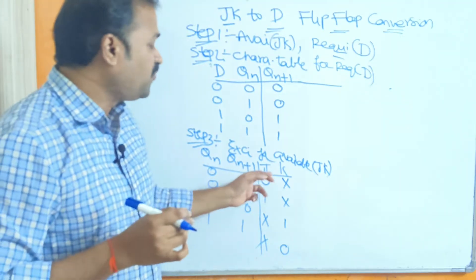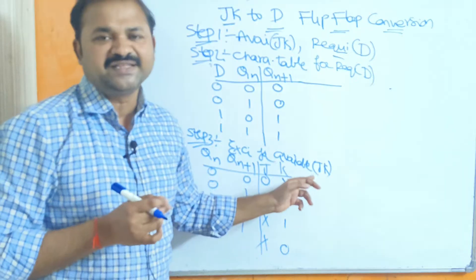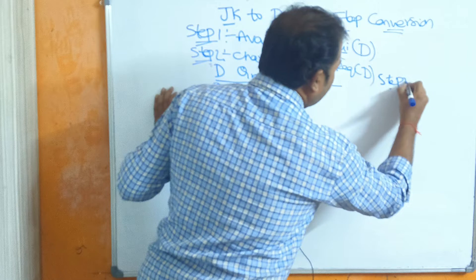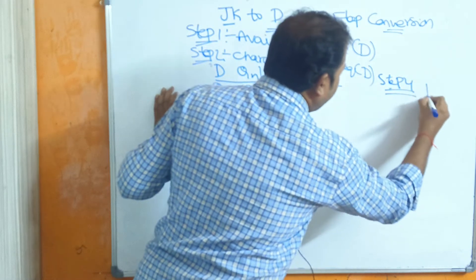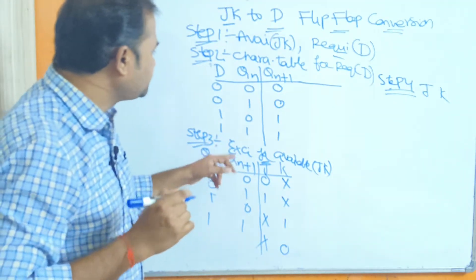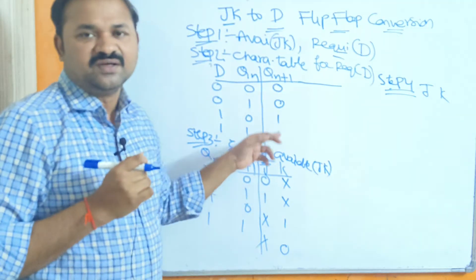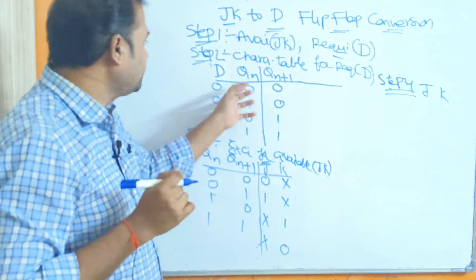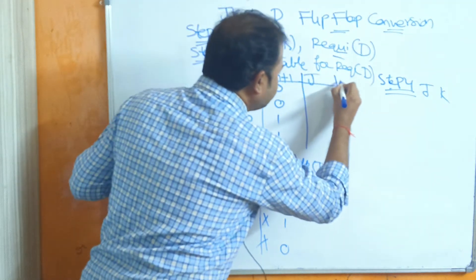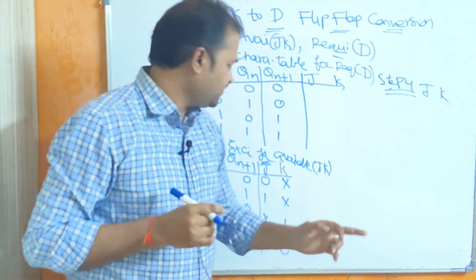Step 4 is also based upon the available flip-flop. We have to find the Boolean expression for the available flip-flop, that is JK. Based upon the excitation table we have to fill this table and obtain the J and K values.